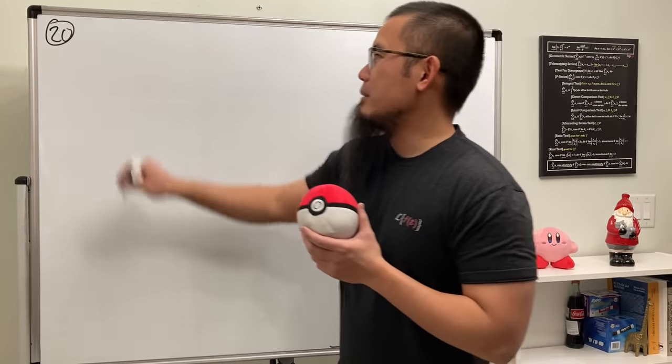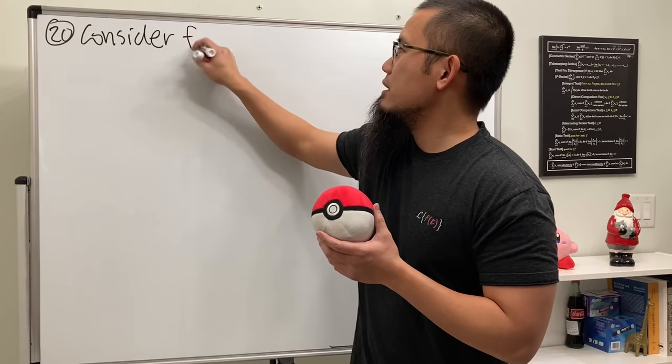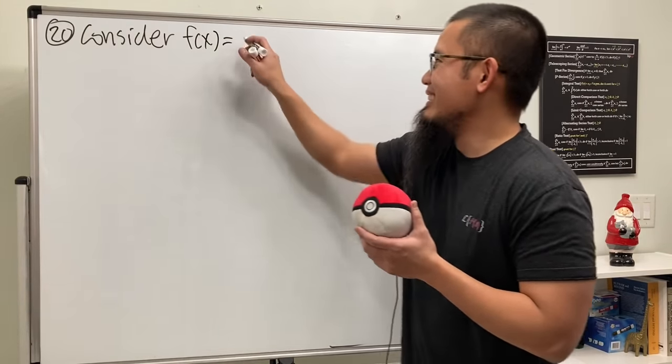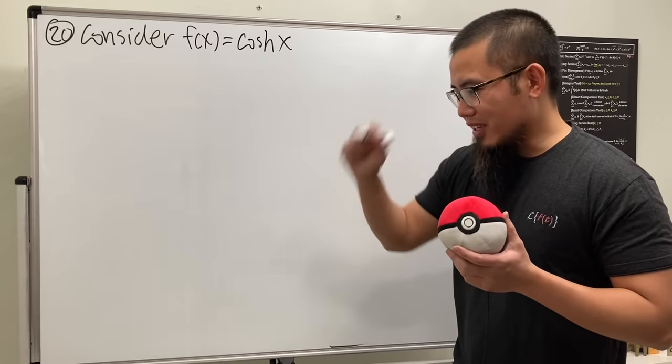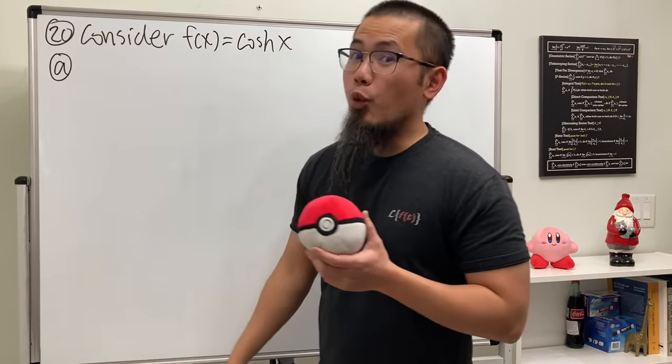This is question number 20 on my final exam. First of all, we are going to consider our function, which is my new favorite, especially after I came up with this question myself: f(x) = cosh(x). Part A, 4 points out of 200 points.